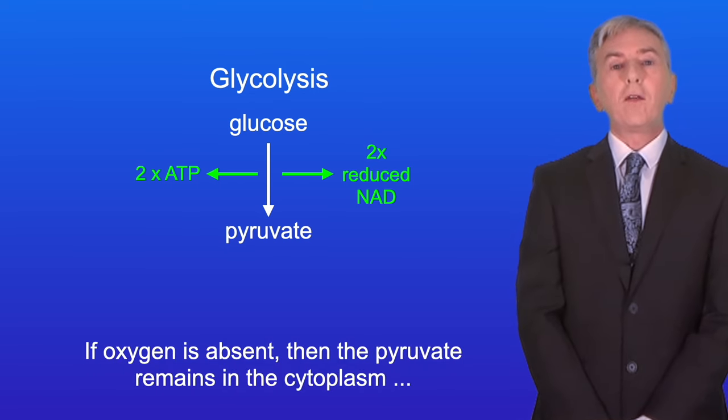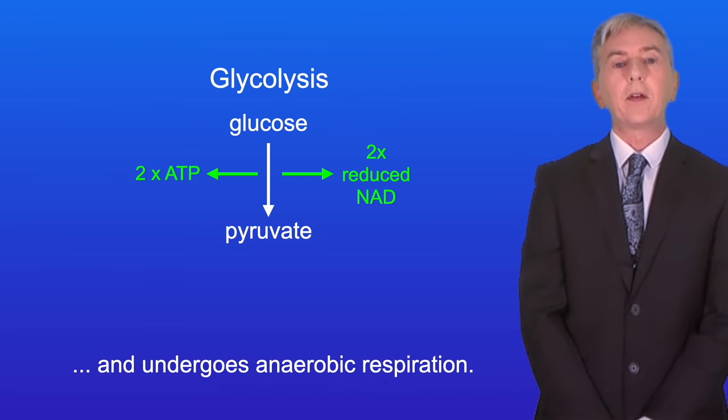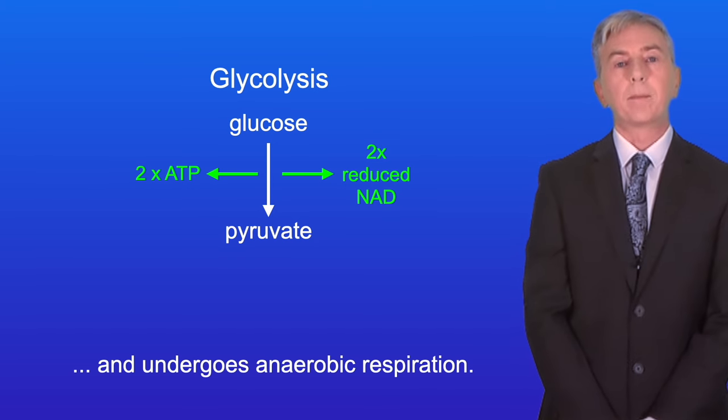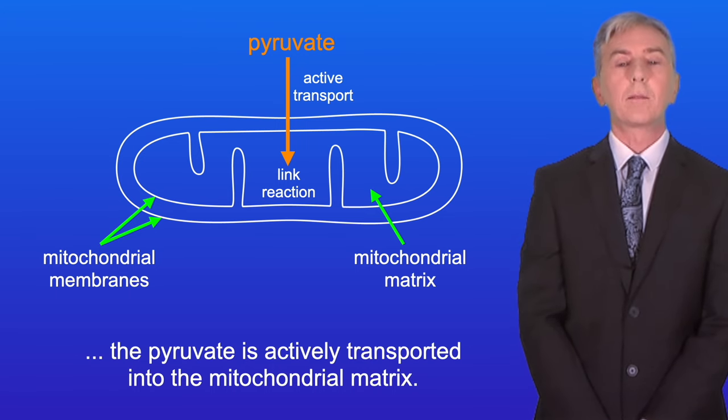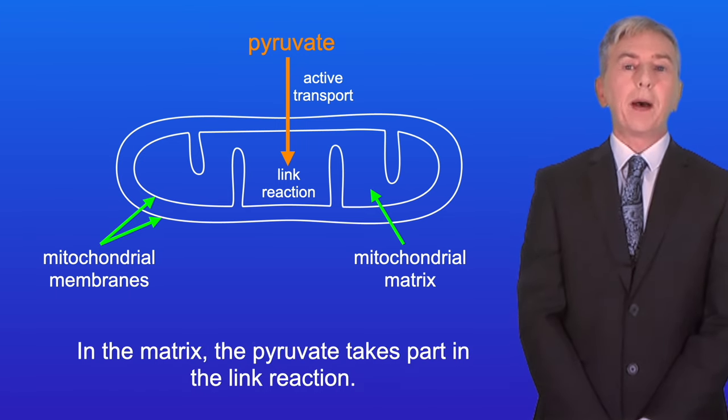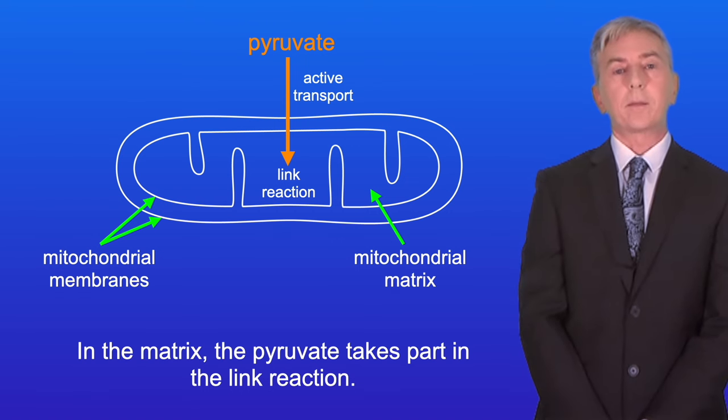Now if oxygen is absent then the pyruvate remains in the cytoplasm and undergoes anaerobic respiration. However in the presence of oxygen the pyruvate is actively transported into the mitochondrial matrix. In the matrix the pyruvate takes part in the link reaction.